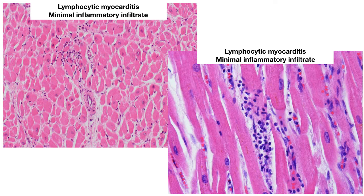Though this example shows a very extensive inflammatory infiltrate, it will oftentimes be pretty patchy — sometimes not found in any given section, or only in one tiny part of a section. Both of these have a minimal inflammatory infiltrate. In the bottom right, you can see what looks like potential dissolution of a cardiac myocyte. It can be very extensive or very patchy.